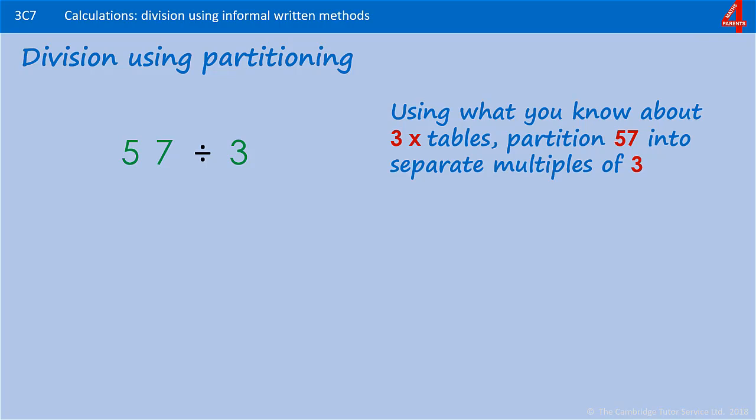Using what we know about the 3 times table, we're going to take a big chunk of a multiple of 3 away from 57. We know that 10 lots of 3 is 30, so we can start by taking that away.